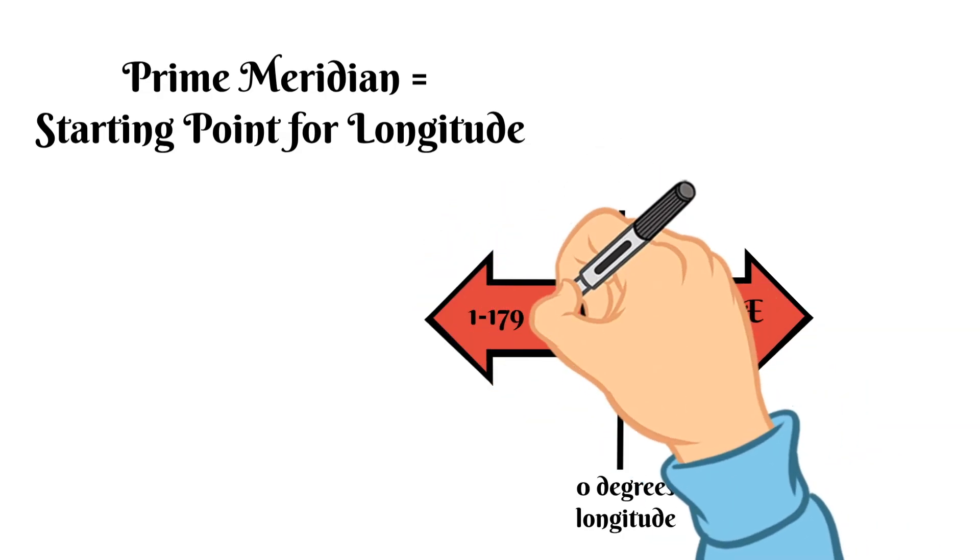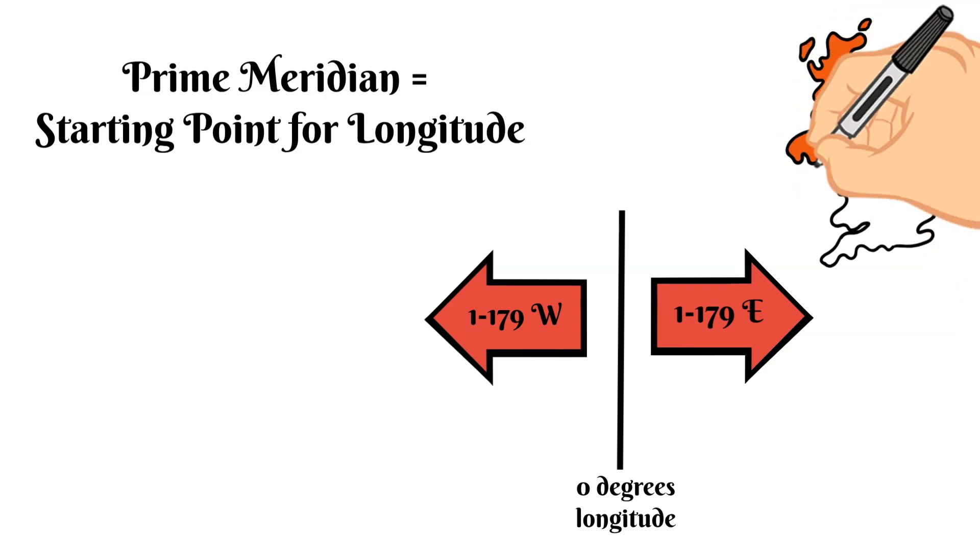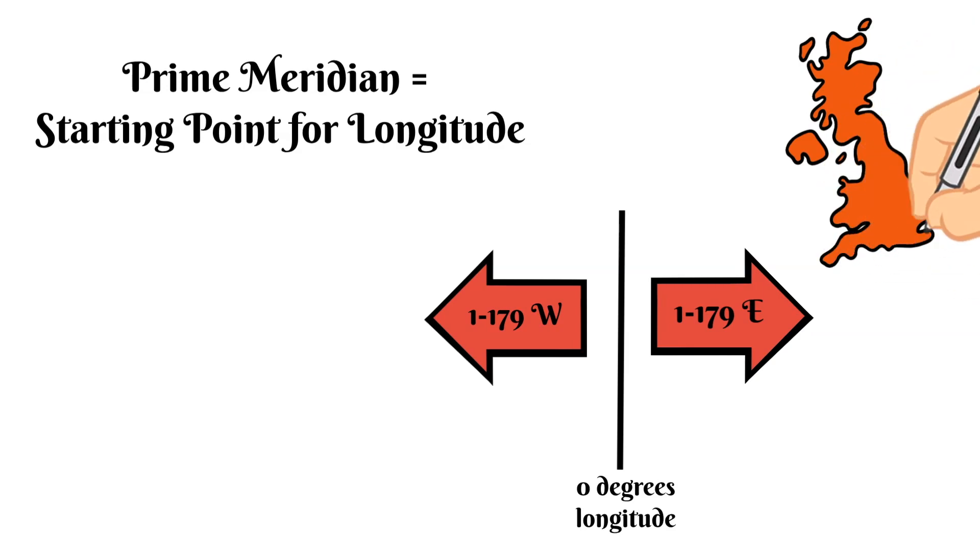Another name for the prime meridian can also be called the Greenwich meridian and this is due to the fact that the prime meridian passes through Greenwich England and there's a short little history about why it passes through Greenwich England.